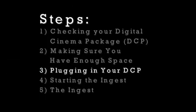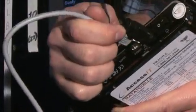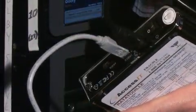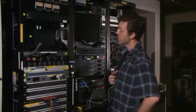Step 3: Plugging in your DCP. First, take your power cord and plug it into an outlet. Then plug the other end into the power brick. Then the other end of the power brick into the drive. Then the USB cable into the drive. Next, turn the drive on and wait a few moments for it to start up. Then plug it into the server.